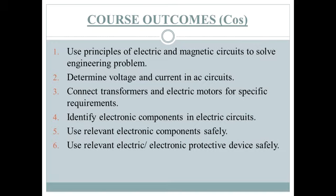The first outcome is to use principles of electric and magnetic circuits to solve engineering problems. The second is to determine voltage and current in AC circuits. The third is to connect transformers and electric motors for specific requirements. The fourth is to identify electronic components in electric circuits. The fifth is to use relevant electronic components safely. The sixth is to use relevant electric or electronic protective devices safely.